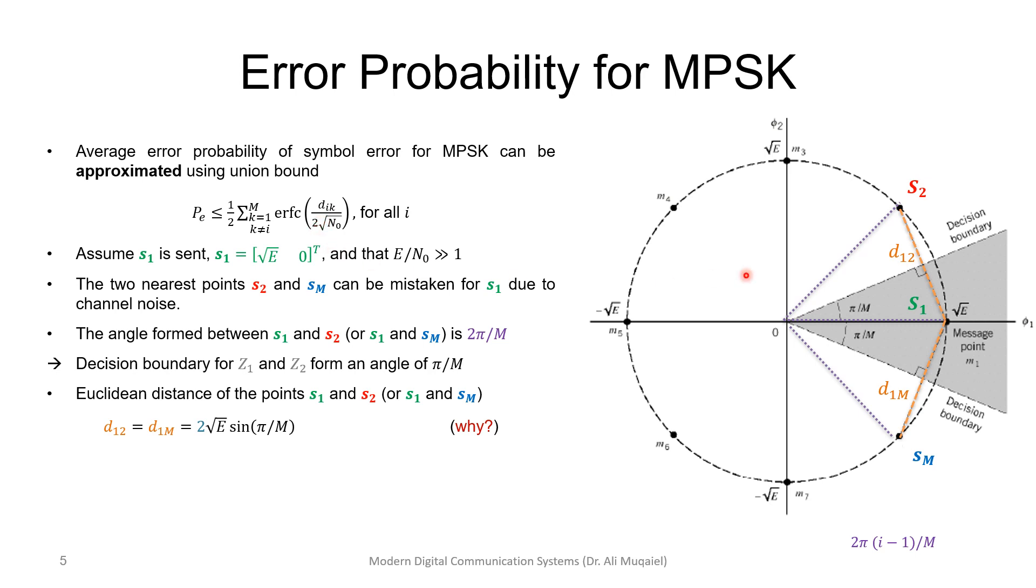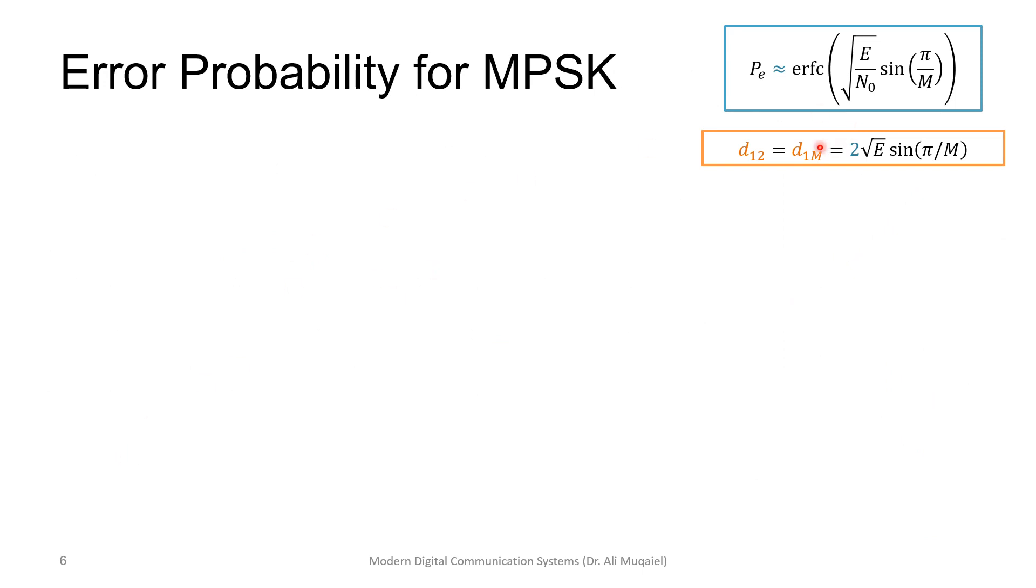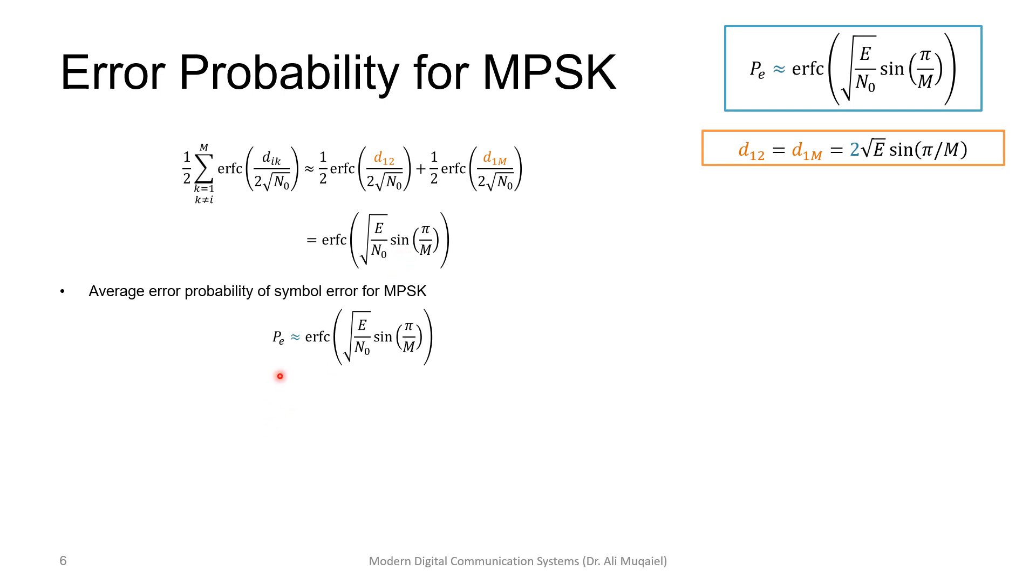So this is the distance that we have just found. Just to match the color, I'm recalling these distances. I'm starting to substitute now. Recall that I will not take the summation from 1 to 8 or from 1 to capital M. We'll just take the two closest ones, and we have an approximate sign here. Just replace these two with equivalence here. If you put the 2, it will cancel with the 2, and then we have square root of E over n0 sine pi over M. You can take your time, take this expression, substitute here and here, and of course if you add the two halves, you get the same expression. So this is our bound: the average probability of symbol error for MPSK is approximately—